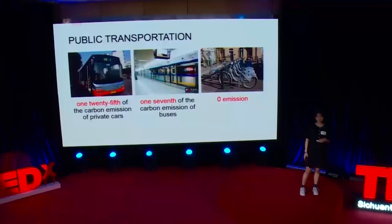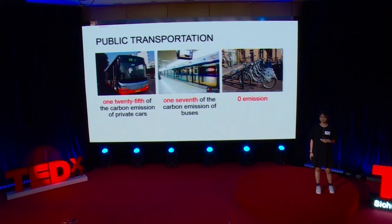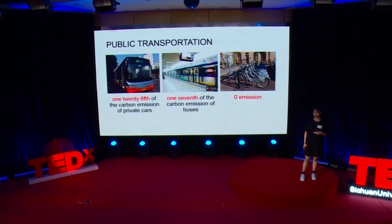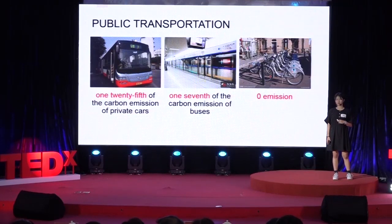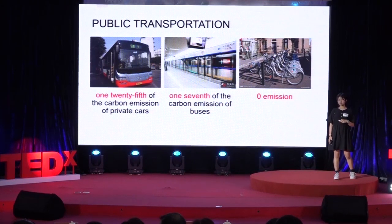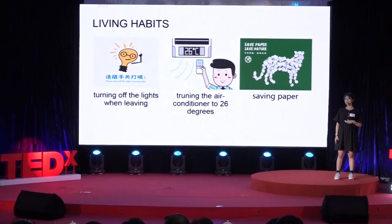As normal high school students, what can we do in our daily life? I have three methods about traveling by public transportation. First, buses, which produce only 1/25th of the carbon emission of private cars. Then the underground, which is only 1/7th of the emission of buses. And finally, bicycles, which have zero emission. About living habits: turning off the lights when leaving, turning the air conditioner to 26 degrees, and saving paper.